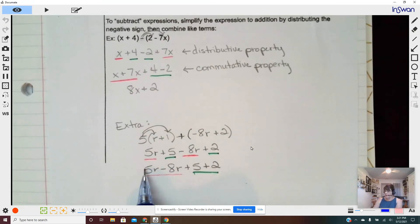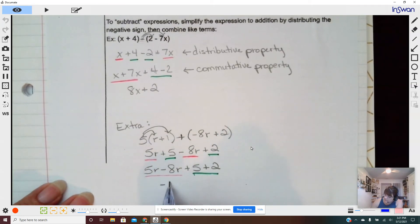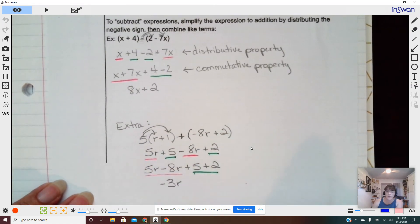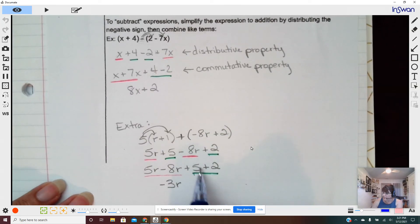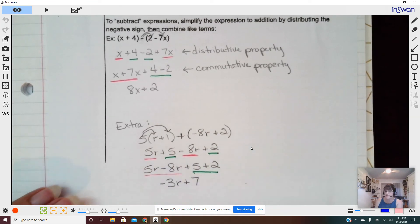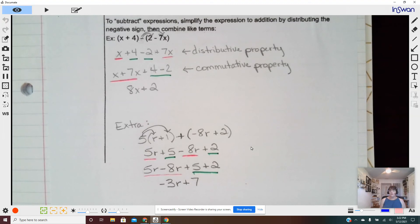If I have a positive five and a negative eight, I am missing three rabbits. That is a problem. If I have a positive five and a positive two, that's seven. So hopefully this helps.